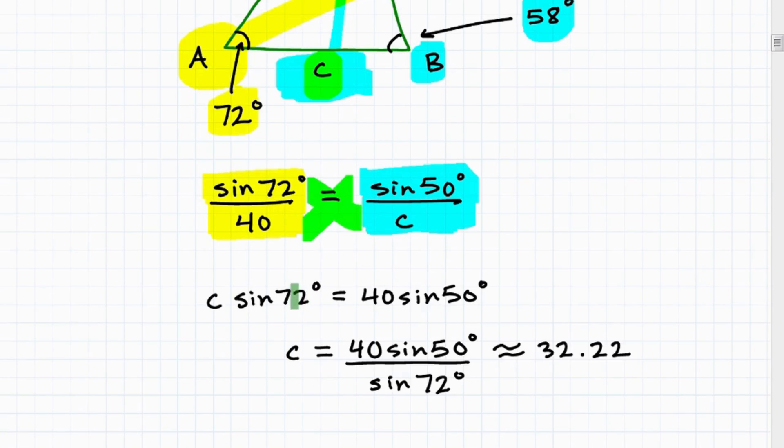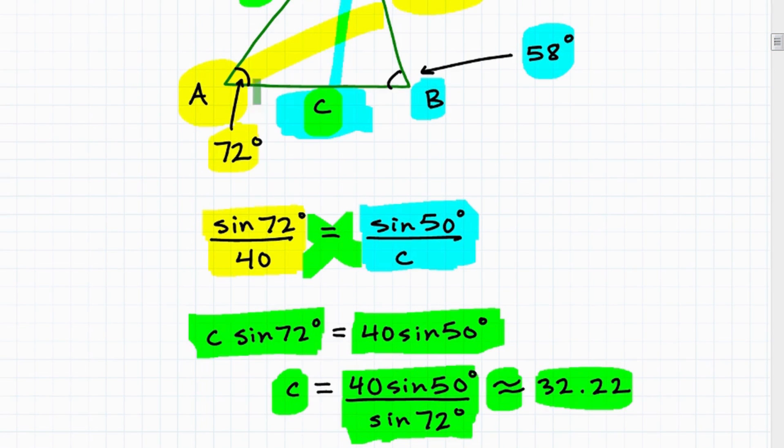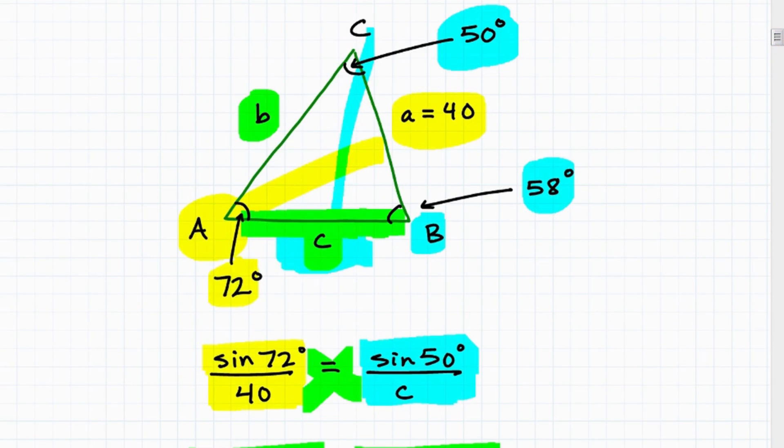So C times sine of 72 degrees will be this, and then 40 times sine of 50 degrees will be so. And let's solve for C by dividing both sides of the equation by sine of 72. Then I go into my calculator very carefully. I plug all this in and you'll get approximately 32.22. Okay. So what is that? Okay. Well, we just solved for this length here in the triangle, length C.